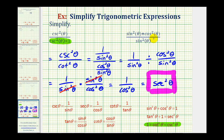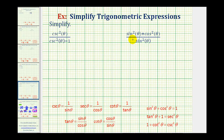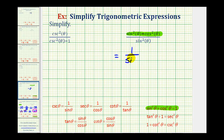Let's take a look at our second expression. Because our denominator does not contain a sum or difference, we could break this up into two separate fractions. But again, because we have trig functions that are squared, we should look at the Pythagorean identities first. Notice here we have sine squared theta plus cosine squared theta equals one — this is a perfect match for our numerator. We can substitute one for sine squared theta plus cosine squared theta, so this simplifies very nicely to just one over sine squared theta. And since one over sine theta is equal to cosecant theta, this simplifies to cosecant squared theta.